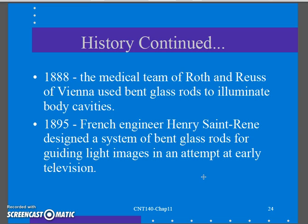In 1888, a medical team looked at using bent glass rods to illuminate body cavities. In the 1880s, if you're working on somebody for surgery or doing an autopsy, it's hard to get candles or oil lamps down into a chest cavity or stomach. So they were experimenting with using bent glass rods to illuminate these cavities — again, kind of harnessing light.